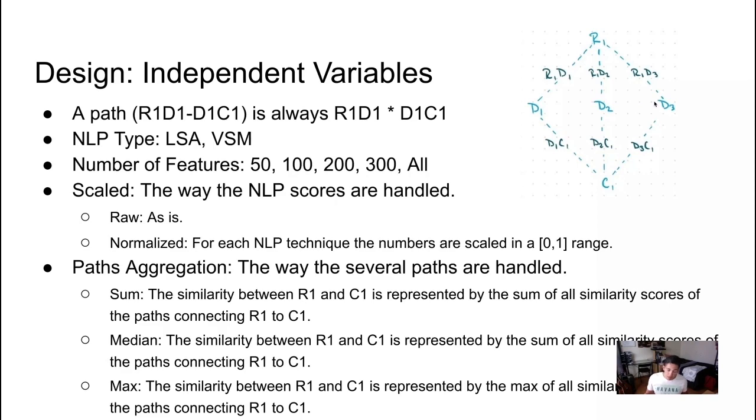There are various ways to combine those to be the same score. Again we could use the maximum, we could use the median, the sum. Those were the different varying techniques we did. We also varied the number of features that NLPs use, we scaled these in different ways to see if that would make a difference. For more details you should really look into the details of the paper.